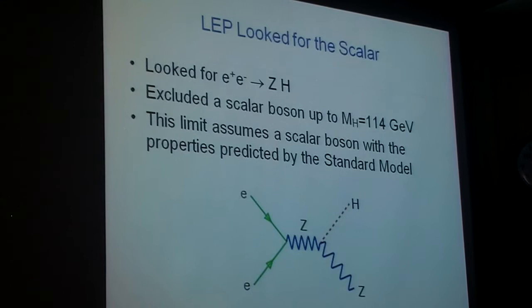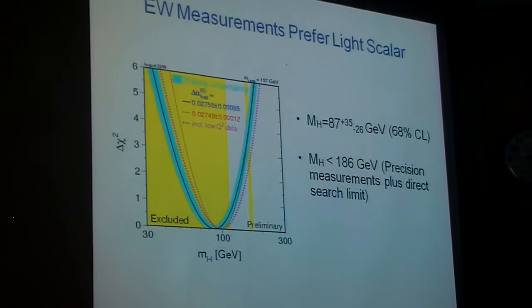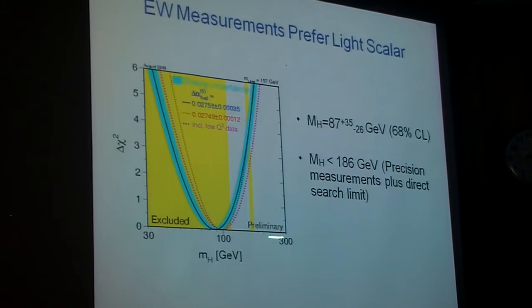Assuming this minimal standard model. So these electroweak measurements, these tables of many data points, prefer a light scalar. This is a chi-squared fit as a function of the scalar mass here, and the minimum of the chi-squared is at 87 GeV.